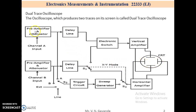Each channel consists of four blocks: pre-amplifier, attenuator, delay lines, and vertical deflection plates. The first two blocks are separately present in both channels, while two blocks are common to both channels.